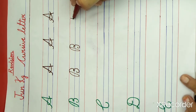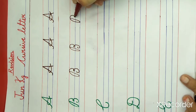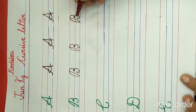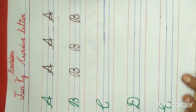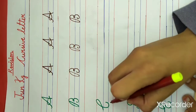Now again draw a slanting line, one more slanting line and a curve line, and a small loop, and stop here. What is this? This is letter B. B for ball. Now what is this? This is letter C.